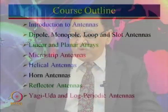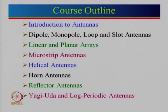Then we will talk about helical antennas — a helical antenna is similar to what an inductor looks like; you take a wire and wrap it around. Horn antennas come in different types: pyramidal horn antenna, sectoral horn antenna, and conical horn antenna, and we will look into all these one by one.